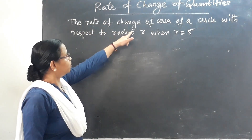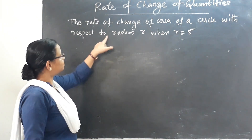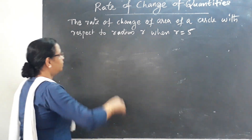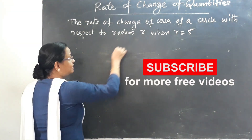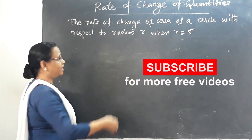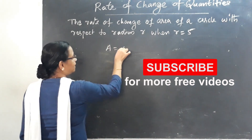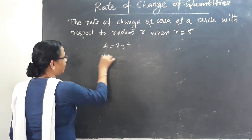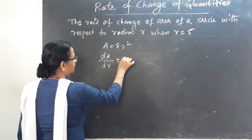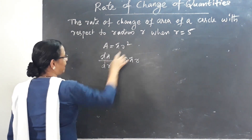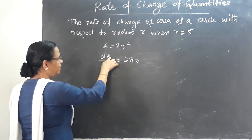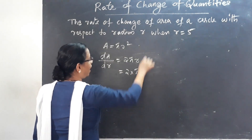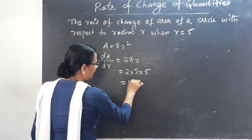The rate of change of area of a circle with respect to radius R, when radius is equal to 5. The area of the circle is A = πR². Differentiating, dA/dR = 2πR. When R = 5, dA/dR = 2 × π × 5 = 10π.